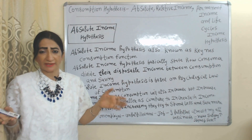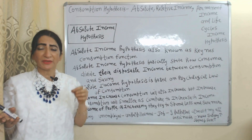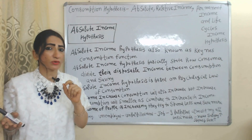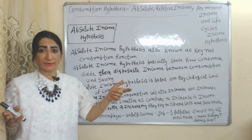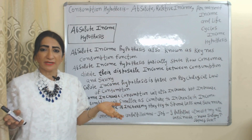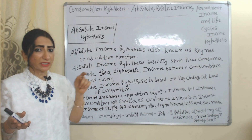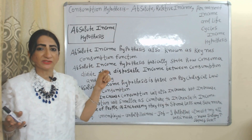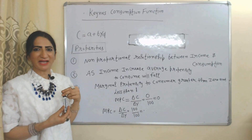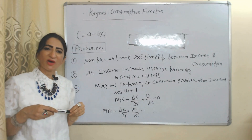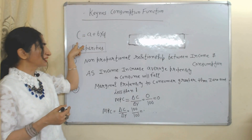So according to the psychological law of consumption, as income increases, consumption also increases, but the increase in consumption is smaller compared to income because as income increases, people spend less and save more. Absolute income hypothesis is based on this psychological law of consumption and is also known as Keynes' consumption function.